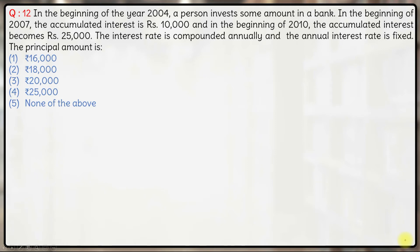In this question, in the beginning of the year 2004 a person invests some money in a bank. In the beginning of 2007 the accumulated interest is ₹10,000, and in the beginning of 2010 the accumulated interest becomes ₹25,000. The interest rate is compounded annually and the annual interest rate is fixed. We have to figure out the initial principal amount.